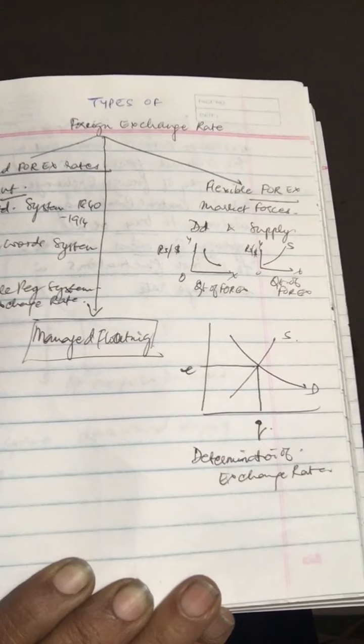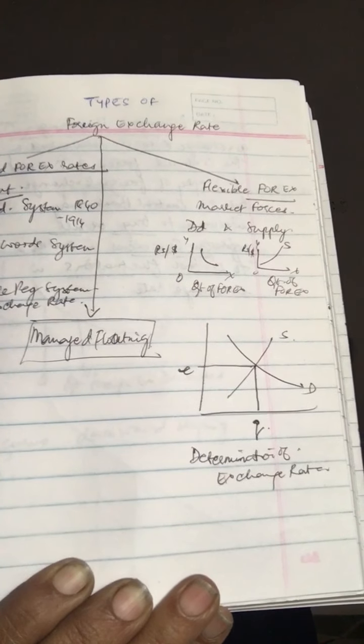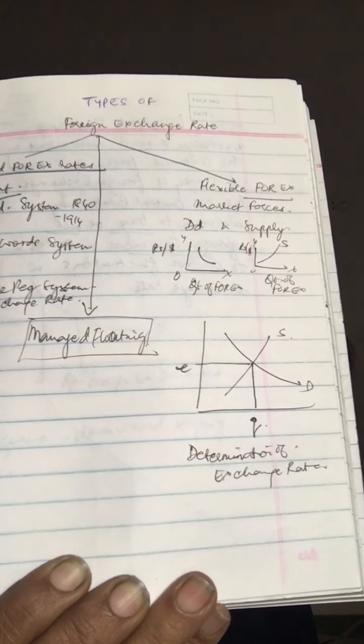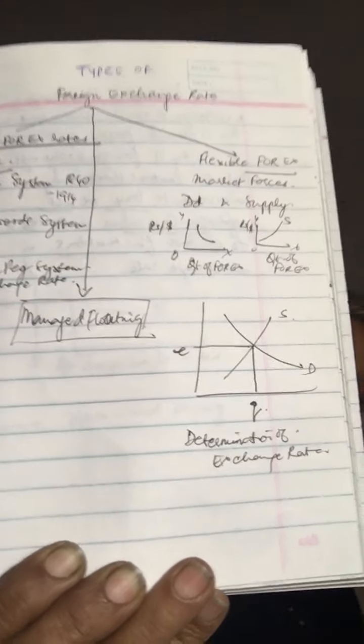This was referred to as mint parity value of exchange. I mean, this is not so important in your exam.